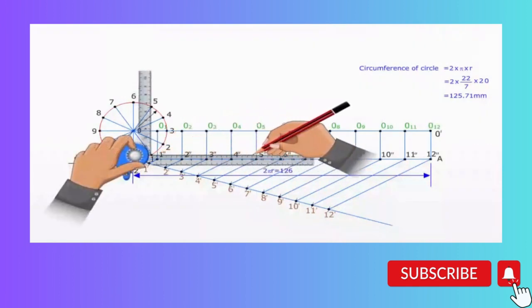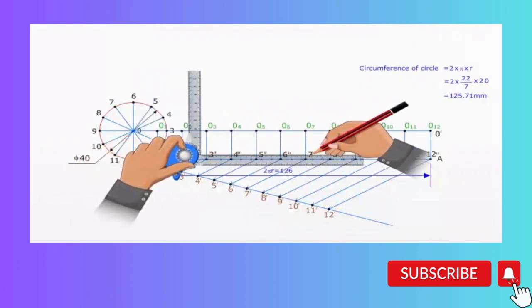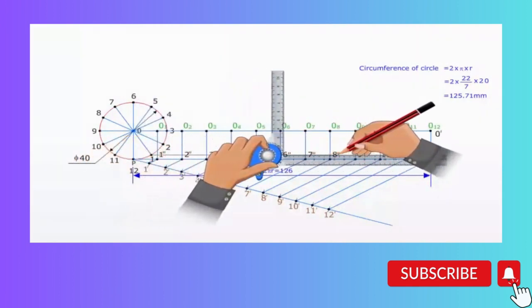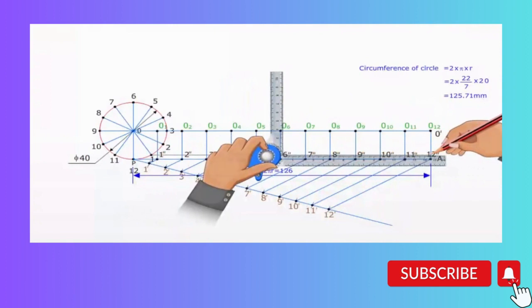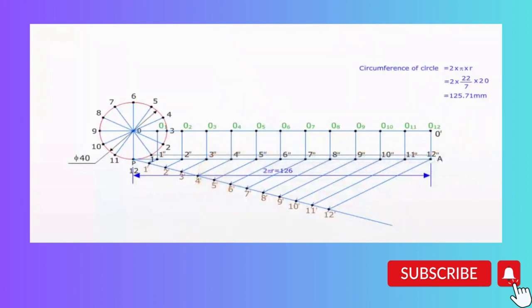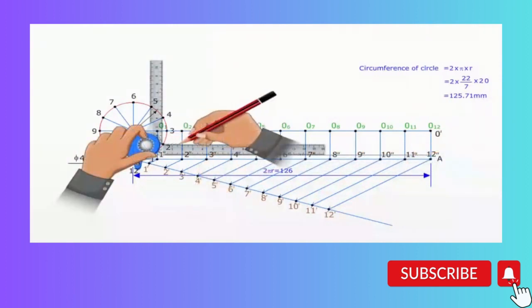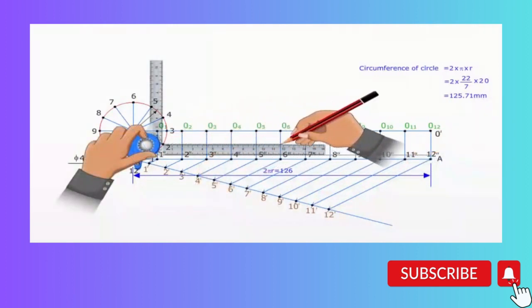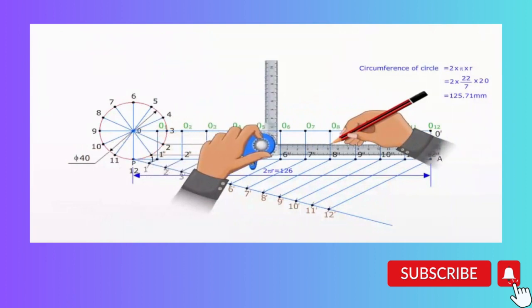Through the points 1, 2, 3, 4, 5, 6, 7, 8, 9, 10, 11, 12, draw lines parallel to PA.